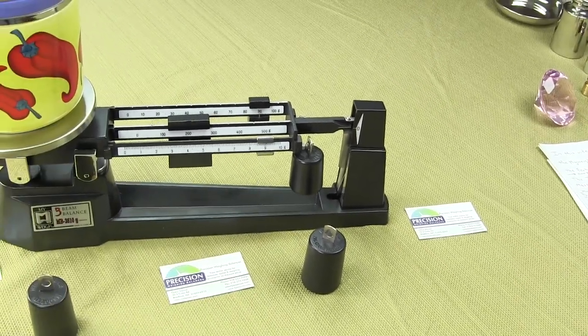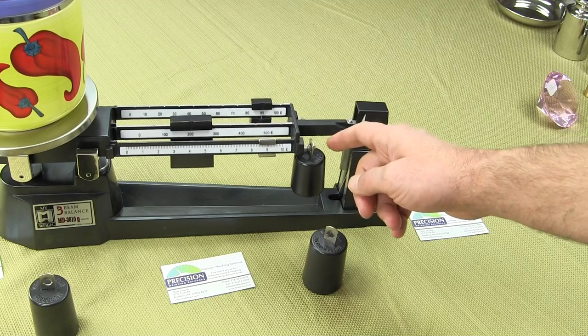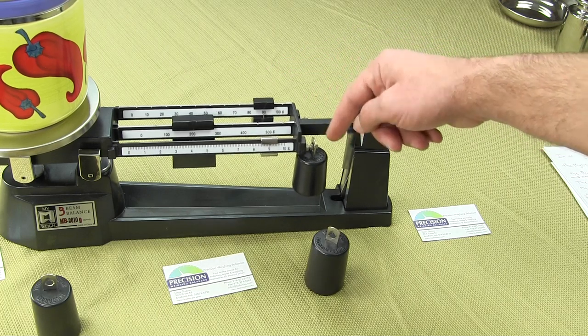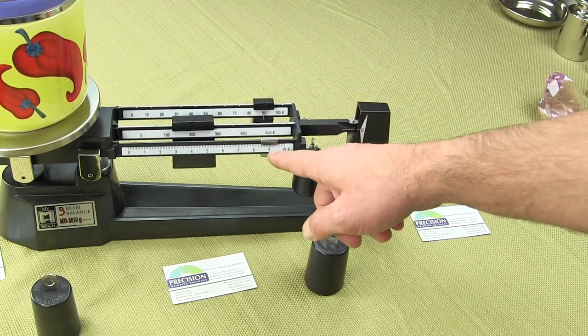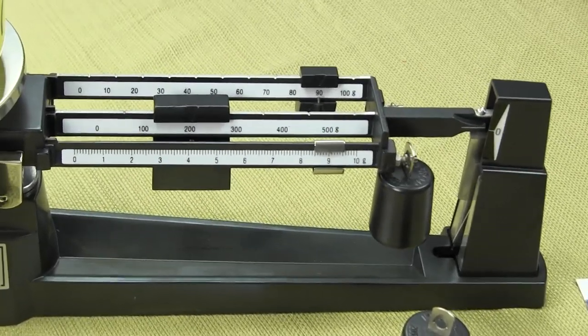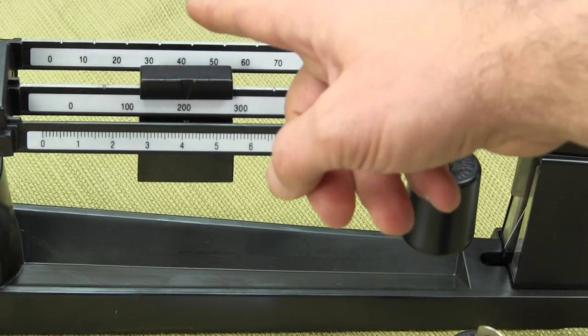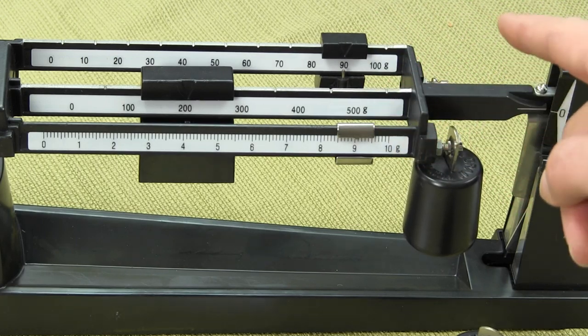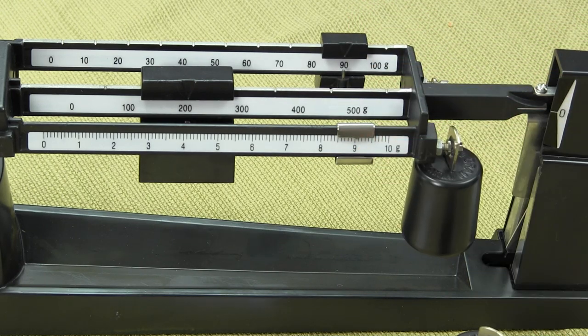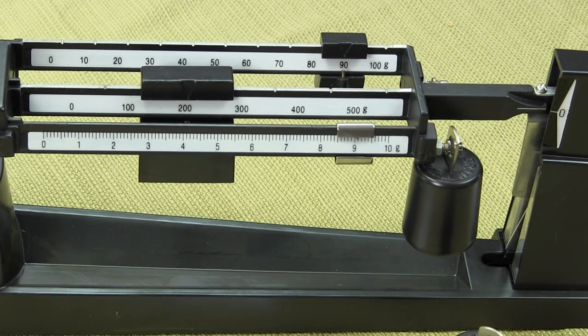The way you determine the weight is you need to add up all the weights again. You'd have 500 for the attachment weight plus 200 is 700, plus 90 is 790, plus it looks like 9 grams. So you would add the attachment weight plus the center rider, the rear rider, and the front rider: 500 plus 200 is 700, plus 90 is 790, plus 9 grams, so this container would weigh 799 grams.